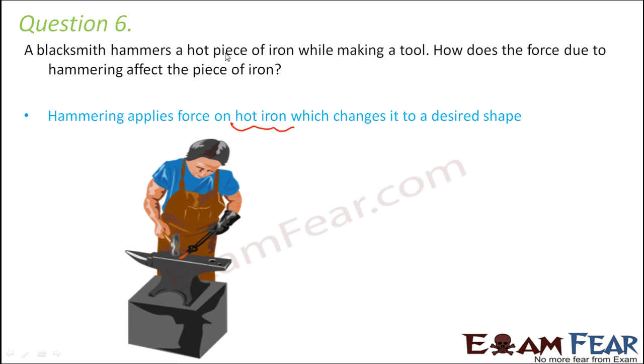Now, hot piece of iron, when the iron is very hot, that time it is flexible enough to take any shape which you want. But once it becomes cold, it becomes extremely hard and you cannot change its shape. Now, as long as the iron is hot, when you hammer it, you are actually applying a force. So when you apply force on an object which is flexible enough, then this will result in a change of shape. So you can change the shape to a desired shape so that you can make the tool you want.